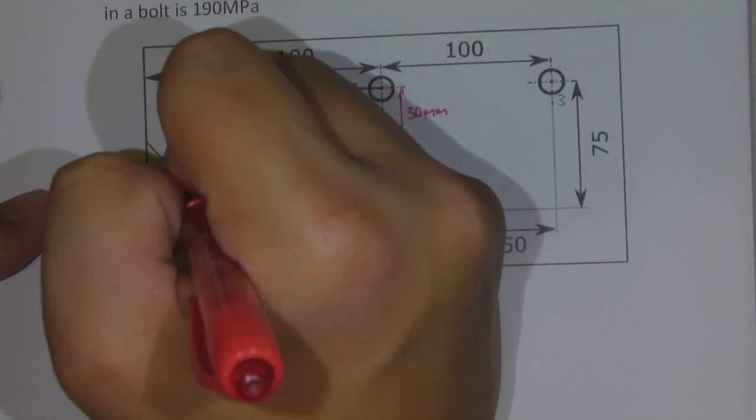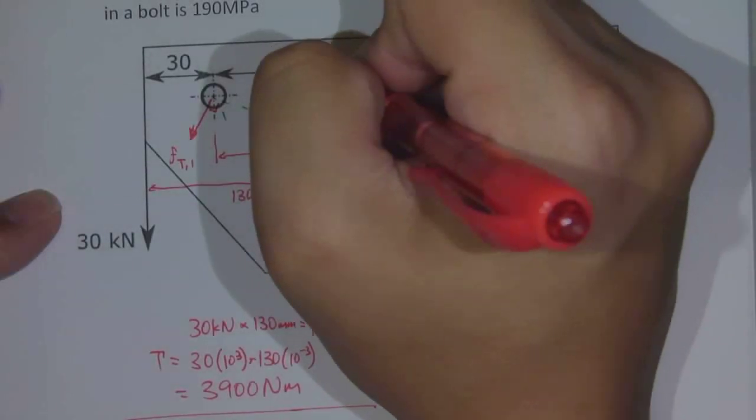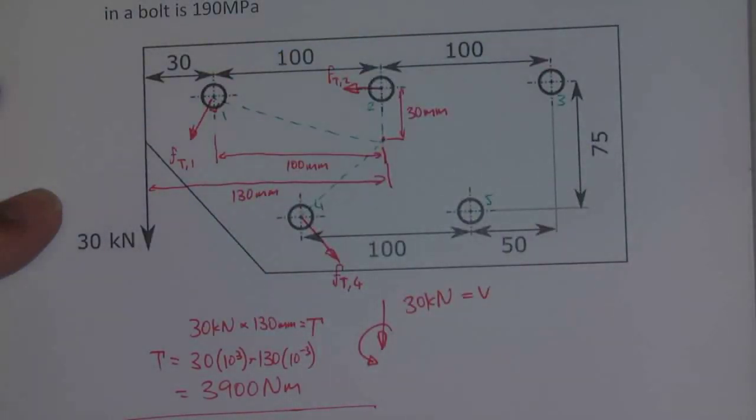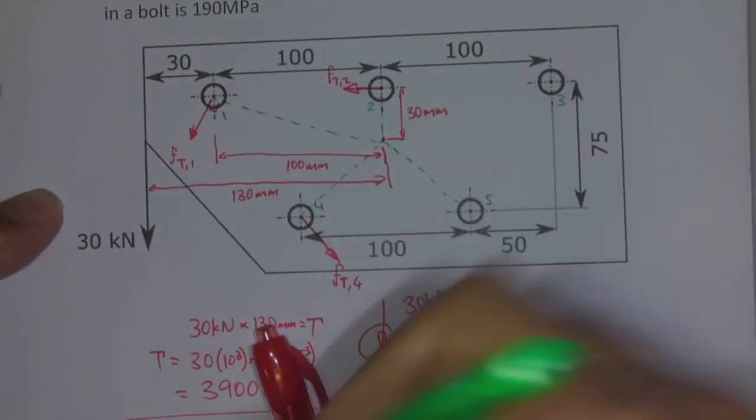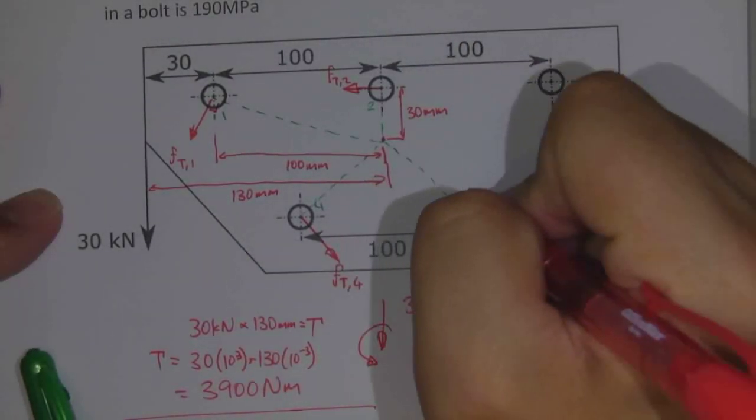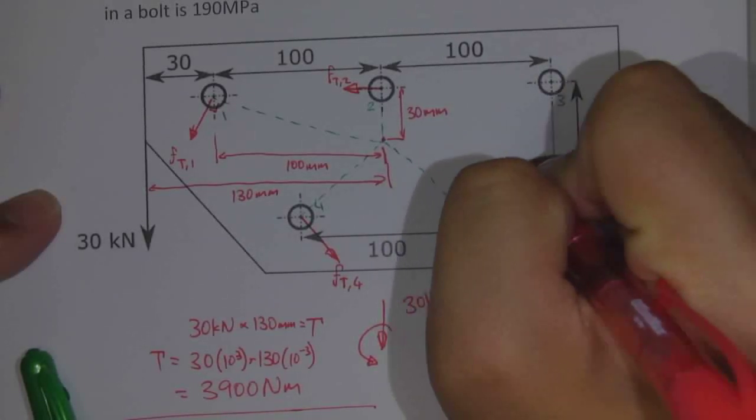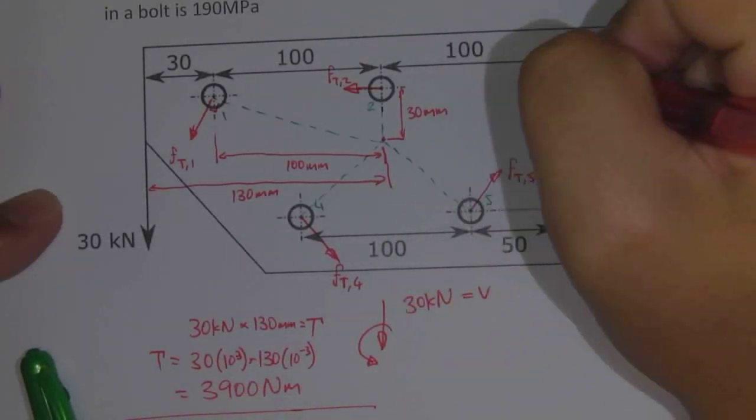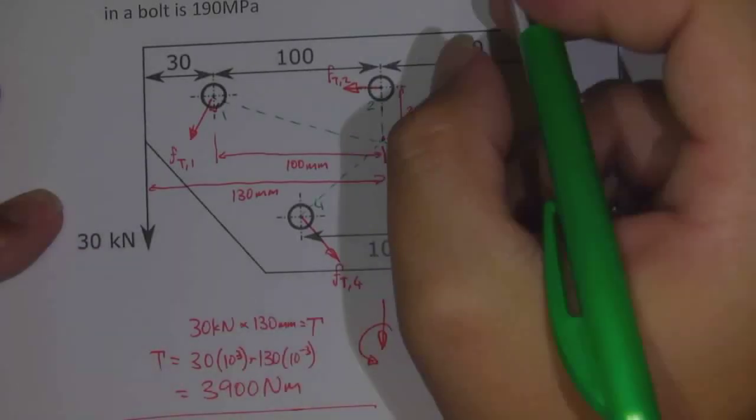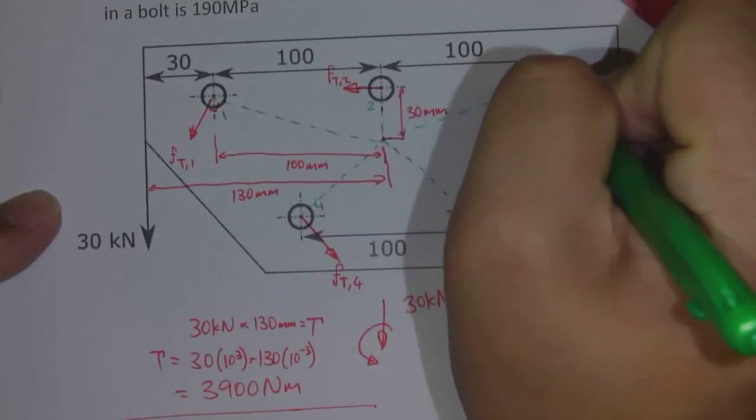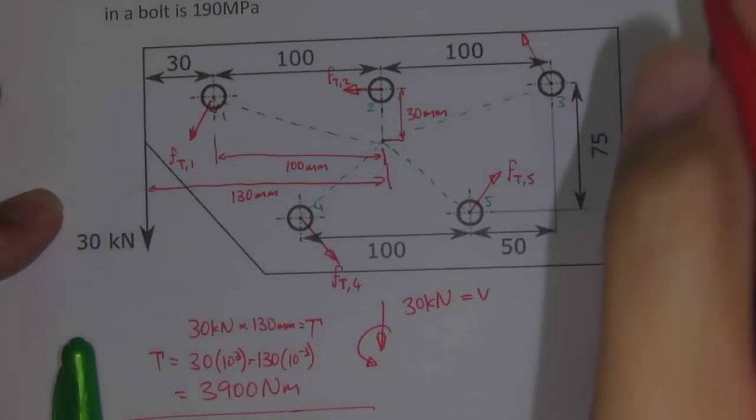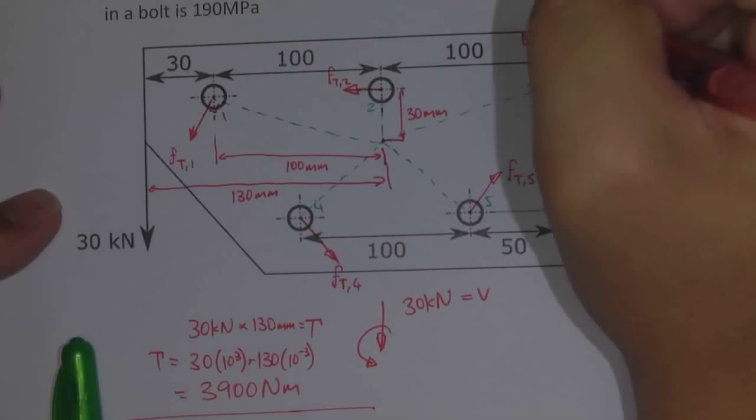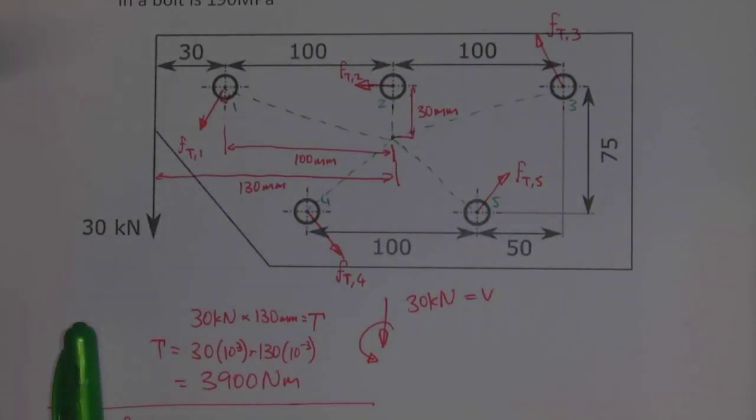We could call this Ft number 4. This would be called Ft for number 1. This is Ft for number 2. And we can continue around the shape for each one of the bolts, and number 3.